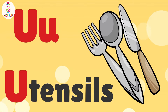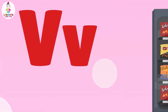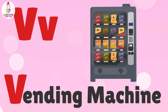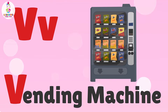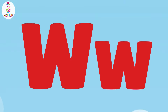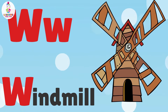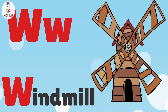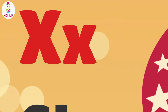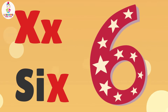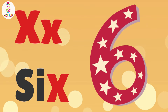U is for Utensils. U. Utensils. V is for Vending Machine. V. Vending Machine. W is for Windmill. W. Windmill. X is for X. X.